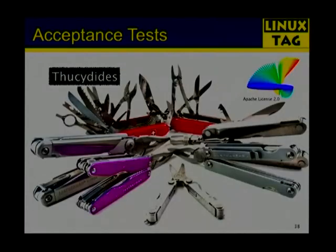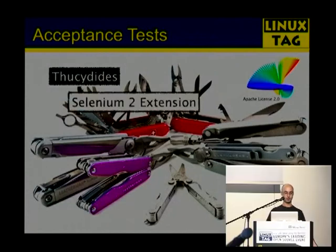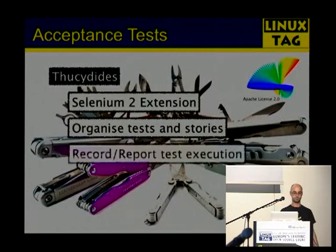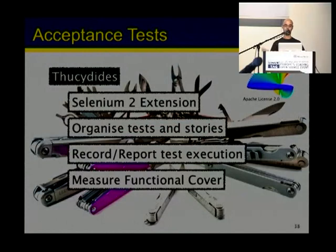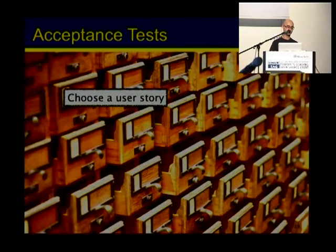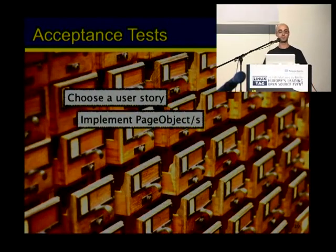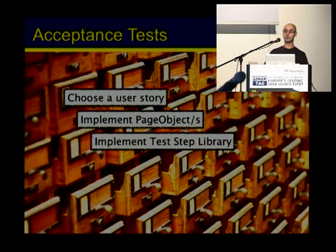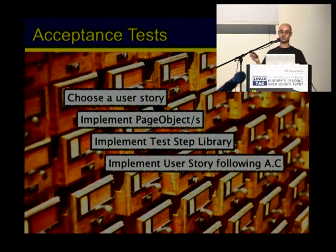That tool is Thucydides. Thucydides is a tool that makes writing acceptance and regression tests easier. It is a JUnit extension that uses the WebDriver API to access web elements. It also helps you organize tests and stories, records reports of the test execution — creating really beautiful reports — and measures functional coverage so stakeholders know at any time how the project is advancing. To write acceptance tests with Thucydides: choose a story, implement page objects, implement a test step library, and finally create the test following the acceptance criteria.